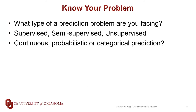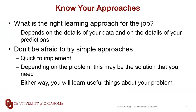It's also important to know what problem you're actually trying to solve: is this a supervised learning problem, an unsupervised learning problem, or something in between? Likewise, what kinds of predictions are we trying to make? Are we dealing in a continuous world, trying to predict probabilities, or predicting class labels? The next question is what are the right approaches for your data, and this is something that comes with experience. Fundamentally, this choice comes down to what your data look like and what kinds of predictions you're trying to make.